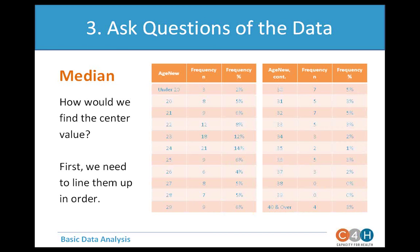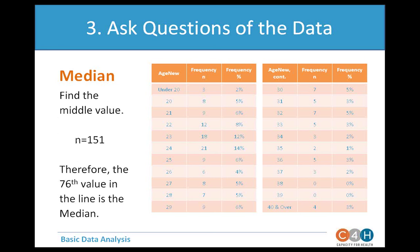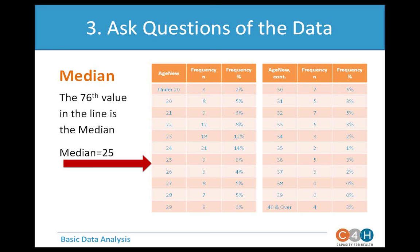In this example, we find the median of the variable 'age new.' We line up all possibilities in order. The total number of valid responses is 151, so the 76th value in the line is the median. Counting up the frequencies from the low end — 3 plus 8 plus 9 plus 12 plus 18 plus 21 plus 9 — gets us past 76, so somewhere in the group of 25-year-olds, one of those 9 is the median value of 25.